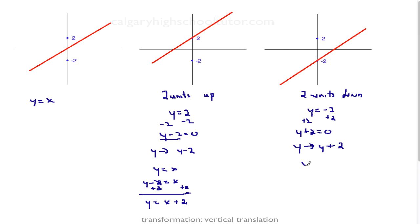And we're going to substitute the value of y for y is equal to x, so we get y plus two is equal to x. And we need to solve for y, so we're going to subtract two from both sides. So when we translate the equation of y equals x two units downward, we get the equation y is equal to x minus two.